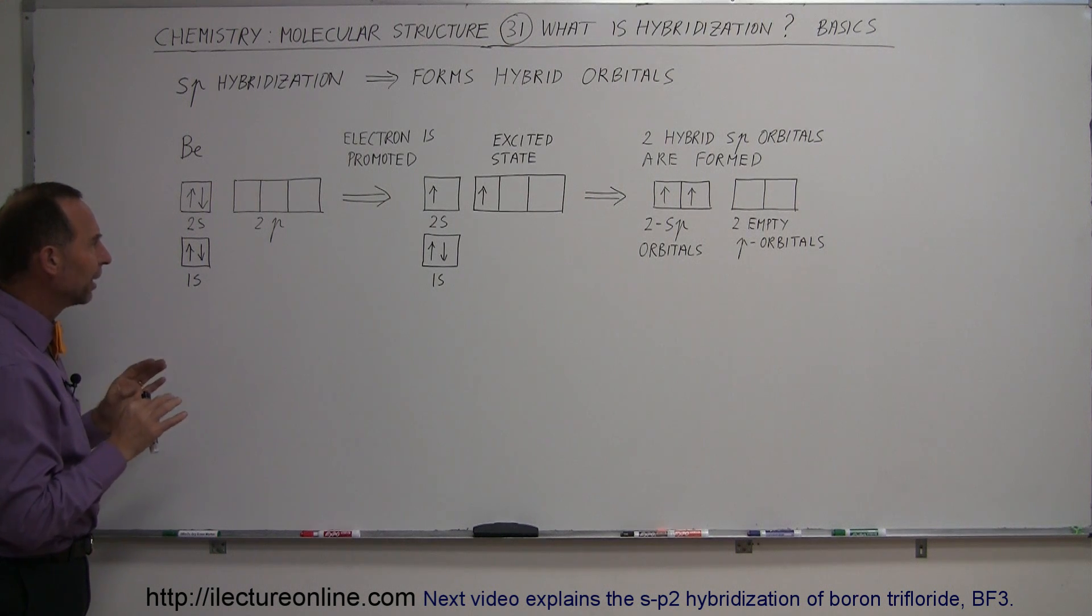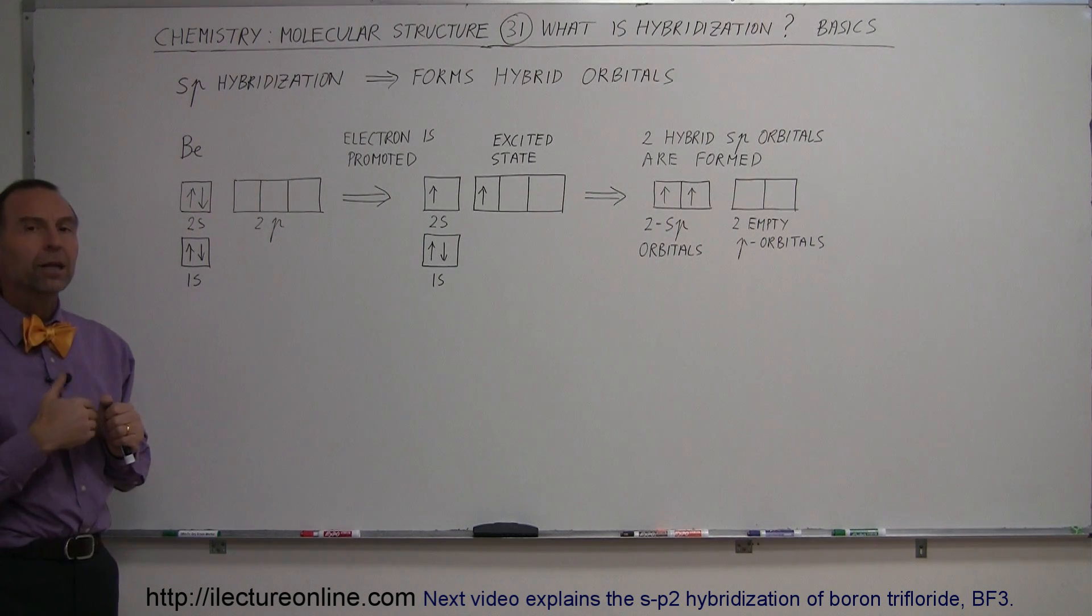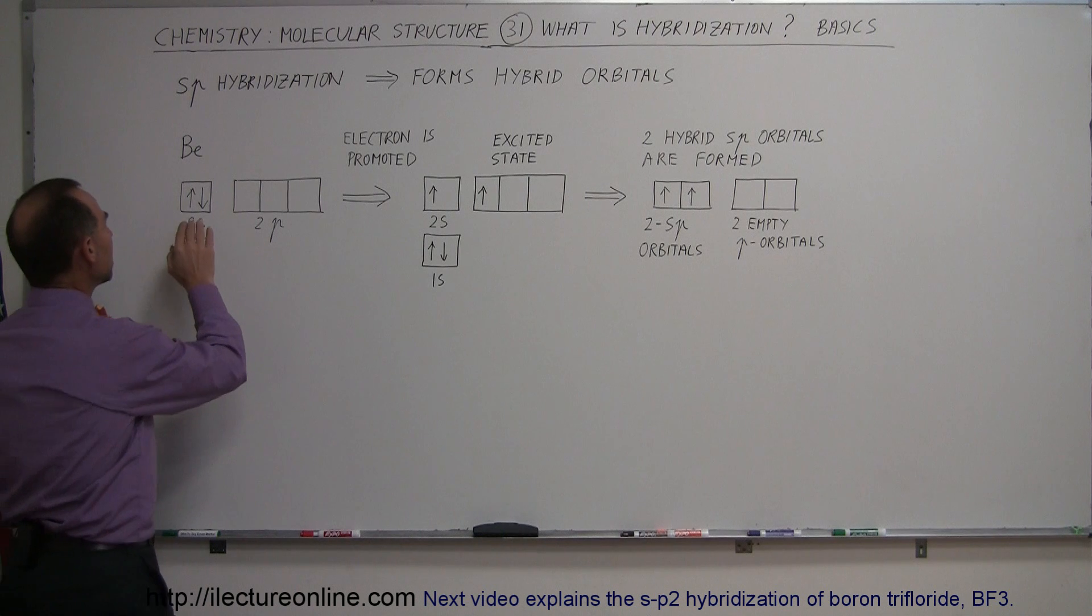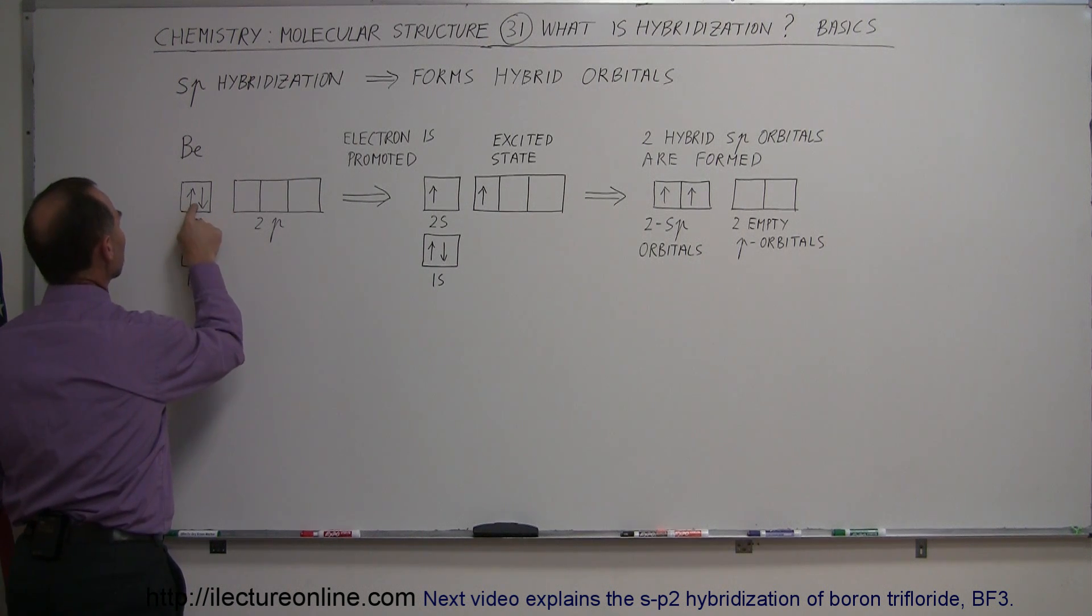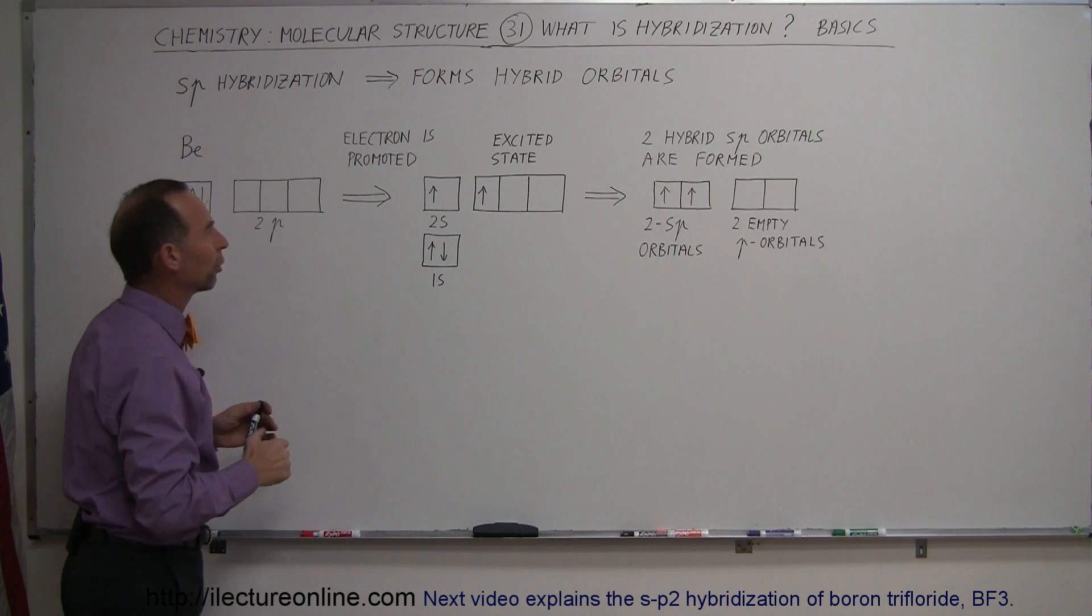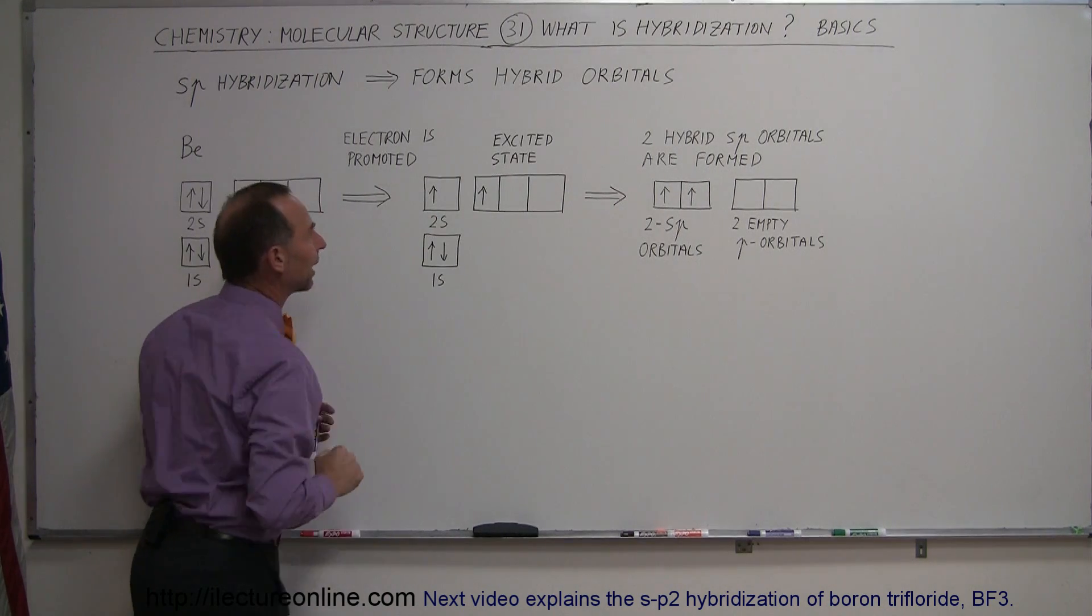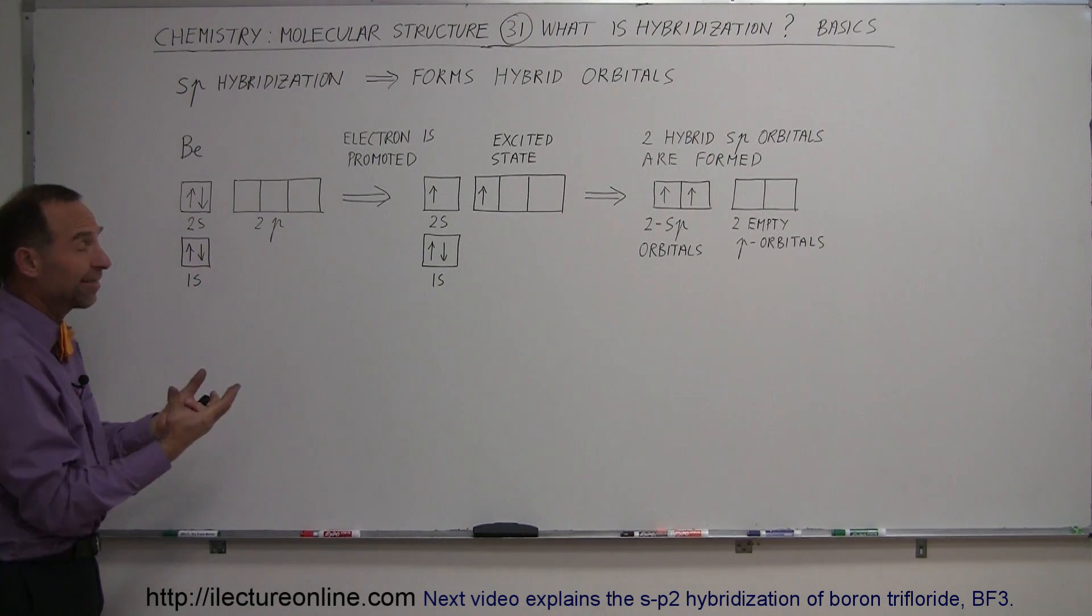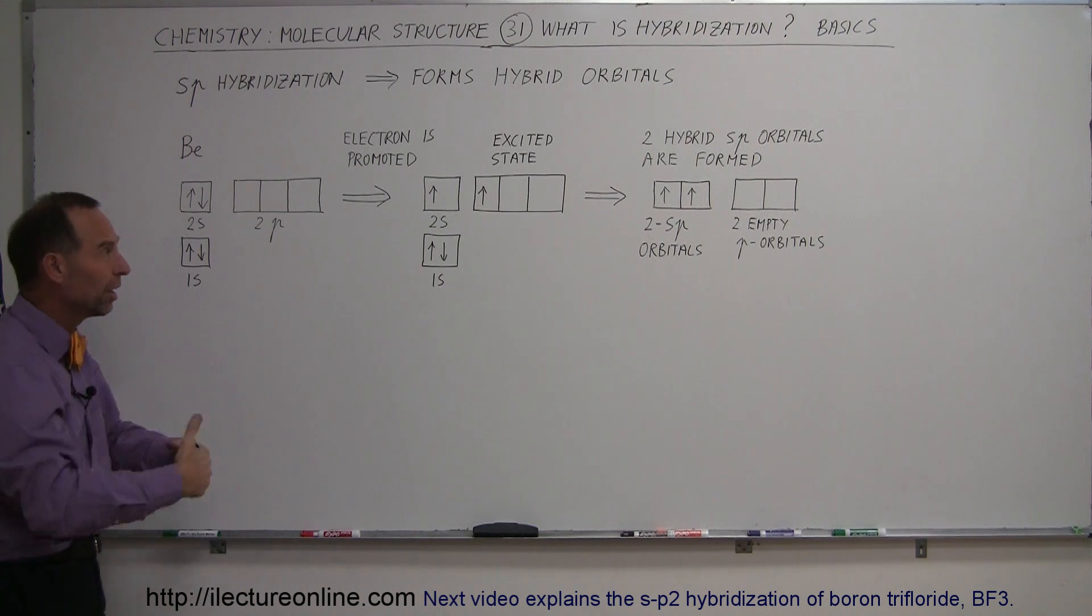But what will happen is that there will be what we call an electron promotion. The beryllium will take one of the electrons in the 2s orbital and move it into one of the empty 2p orbitals. And so it'll look like that. And so that will then be an excited state because you have to put energy into it to make that happen.